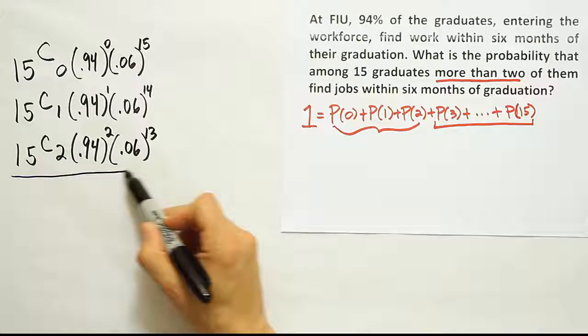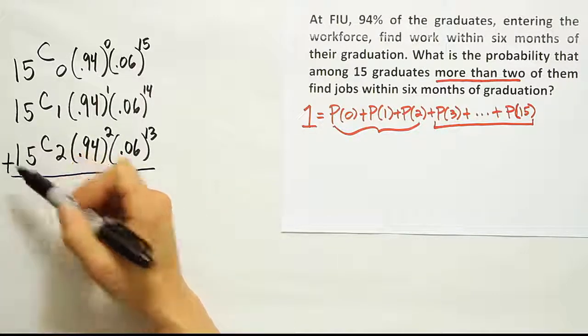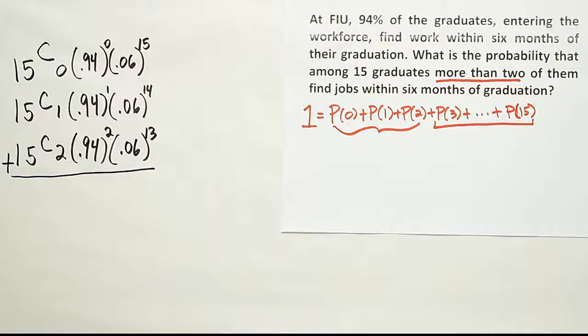Now, if we add all these probabilities together, we should end up with the total probability that we will subtract from one. Okay, so let's do that. Let's figure out what each of those probabilities are. To do that, we'll work with the calculator.